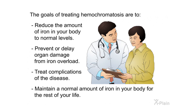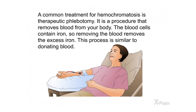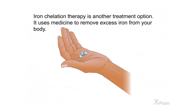The goals of treating hemochromatosis are to reduce the amount of iron in your body to normal levels, prevent or delay organ damage from iron overload, treat complications of the disease, and maintain a normal amount of iron in your body for the rest of your life. A common treatment is therapeutic phlebotomy — a procedure that removes blood from your body. Since blood cells contain iron, removing blood removes excess iron, similar to donating blood. Iron chelation therapy is another option, using medicine to remove excess iron.